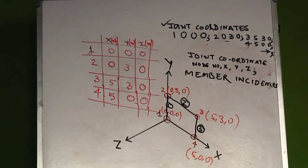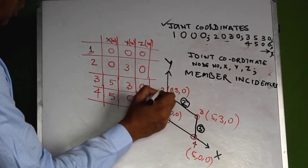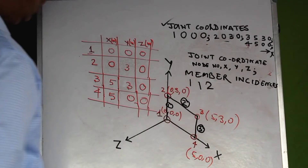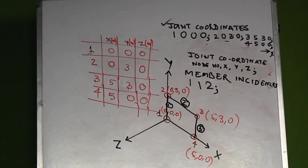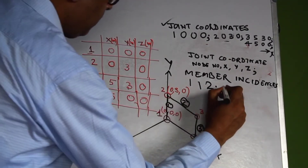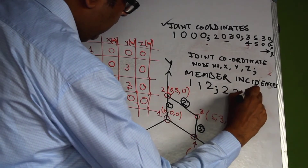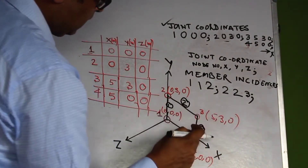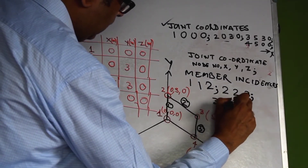So how do we define member incidences? Here we have drawn a plane and we know that member 1 is between node 1 and node 2, so we write that member 1 is between node 1 and node 2. Member 2 is specified as a member between node 2 and node 3. Member number 3 is defined as between node 3 and node 4.